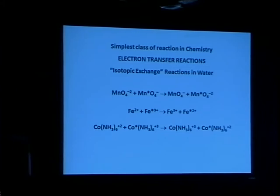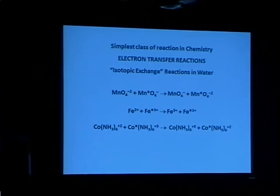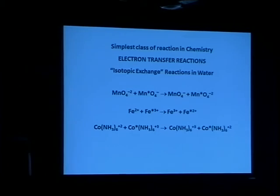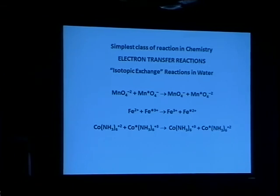But what's changing is not the isotope, but the electron. The electron, which was formerly in this type of ion — a manganate ion — has now appeared in the other type of ion, which is a permanganate. The chemists found ways of separating the two kinds of ions, and they could see the accumulation of radioactivity in the second type of ion, and they could measure the reaction rate that way. So these are three examples, out of hundreds, of the simplest type of reaction in all of chemistry.